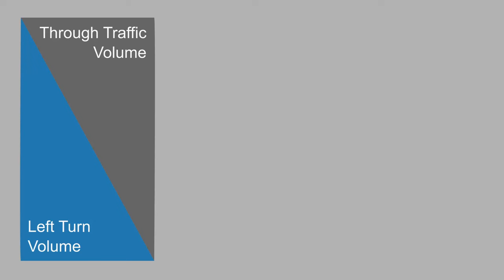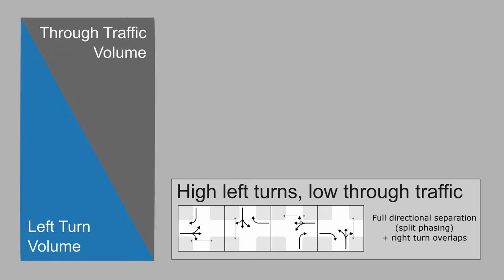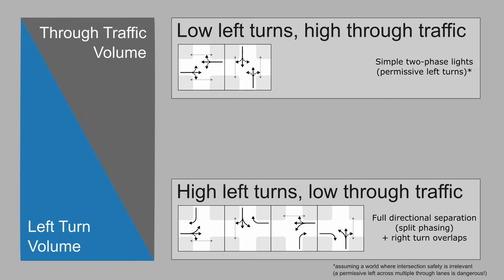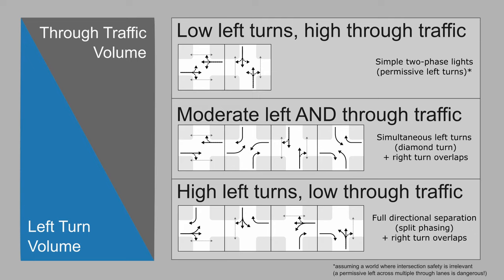If you've watched my last video you'll remember that split phasing on all approaches is really good when you have high volumes of turning traffic, but absolutely terrible when you have high volumes of through traffic. Vanilla works fine when the intersection is mostly through traffic and hardly anyone is turning — but what about that middle area where you have a little bit of through traffic and a little bit of left-turning traffic? Well, that's where you want simultaneous left turns. Are those possible in vanilla?